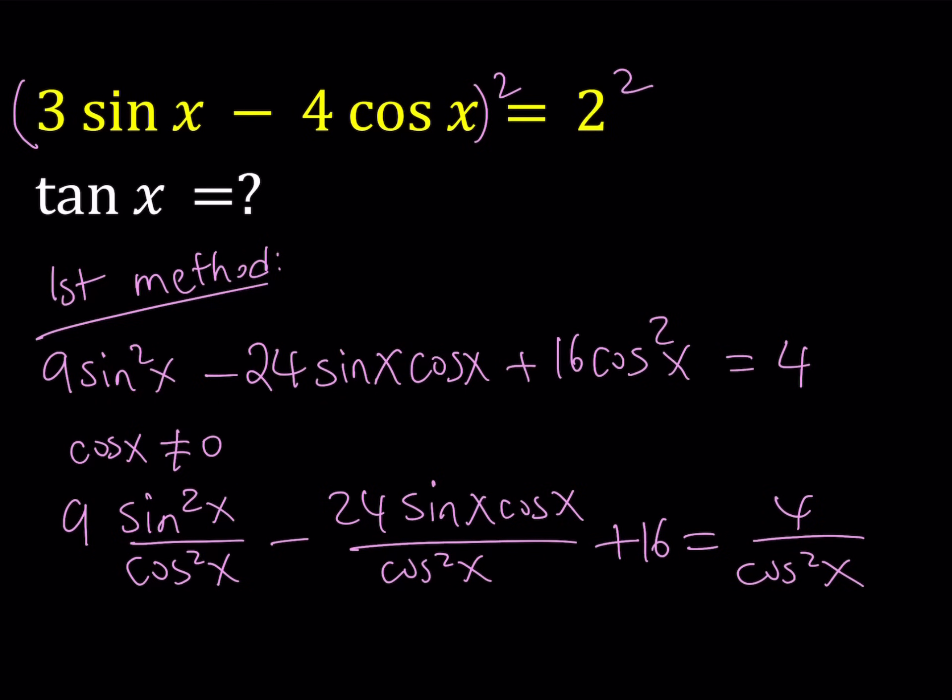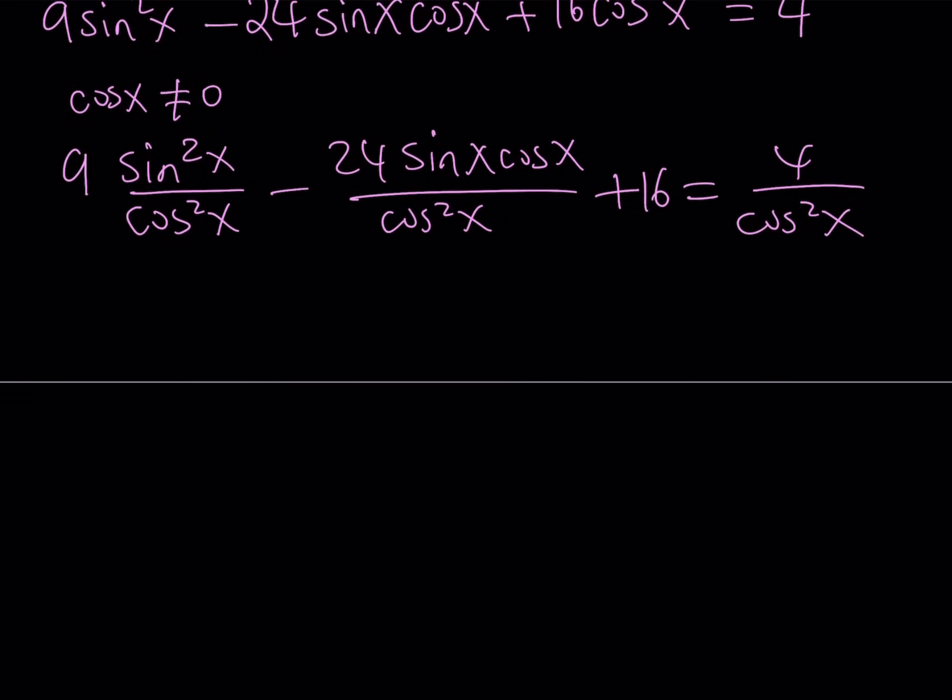Let's go ahead and divide both sides by cosine squared x. And when we do, we're going to get 9 sine squared x divided by cosine squared x minus 24 sine x cosine x divided by cosine squared x plus 16 equals 4 over cosine squared x.